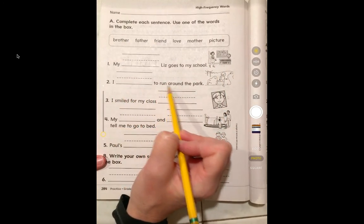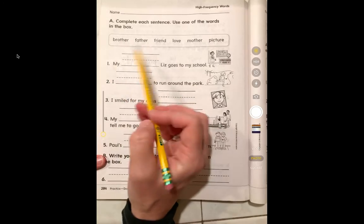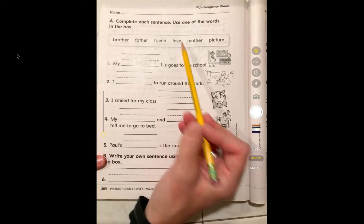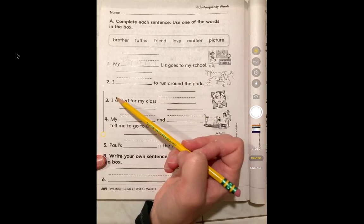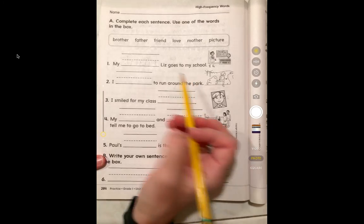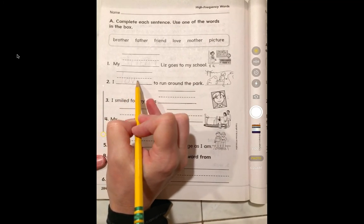I blank to run around the park. I brother to run around the park? No. I father to run around the park? No. I love to run around the park? Yeah, that could work. I mother to run around the park? No. I picture to run around the park? No. What was the only one that made sense? Love. Good. And you will continue on with the rest.